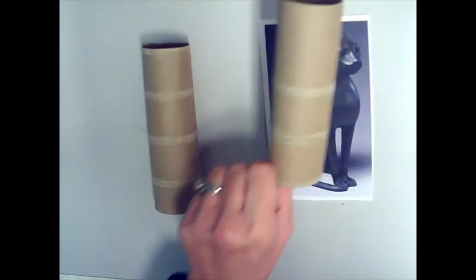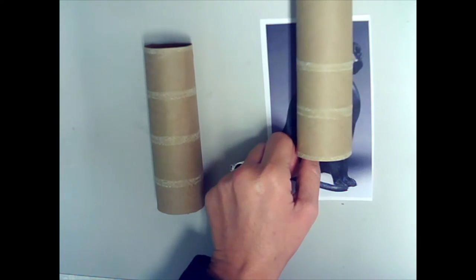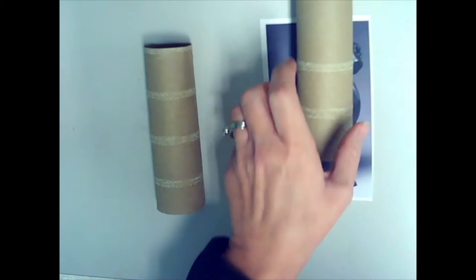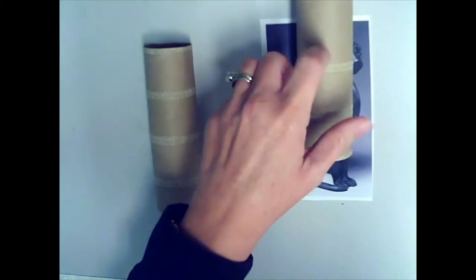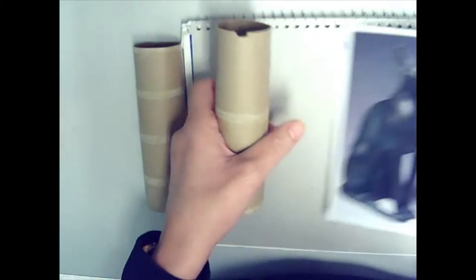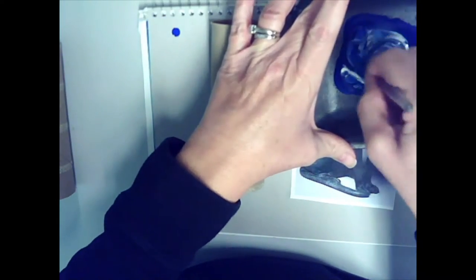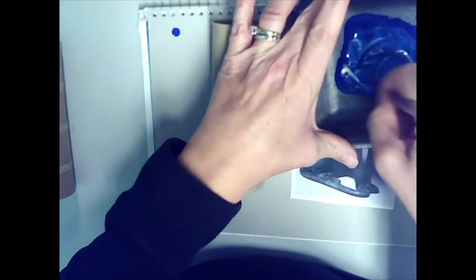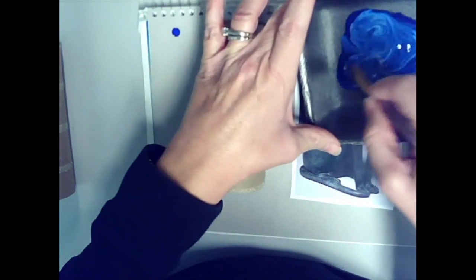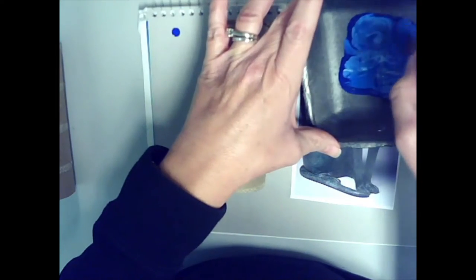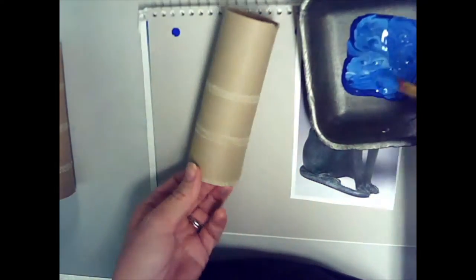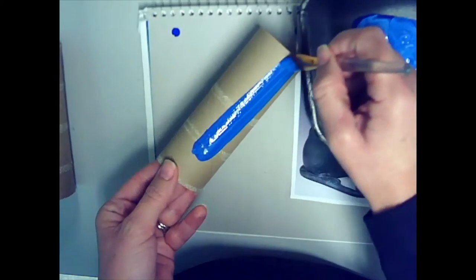You are going to need one toilet paper roll or one paper towel roll cut in half. You're only going to need half of it. If you have paint at home, this is the perfect opportunity to use paint. I have a little bit of blue and white paint. The first thing I'm going to do is mix that together, get a nice consistency there.